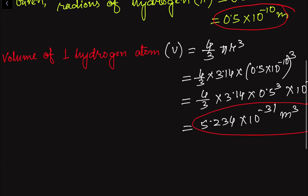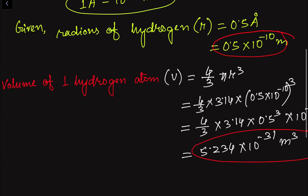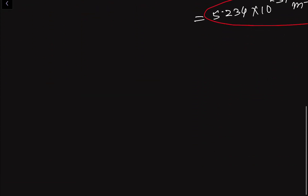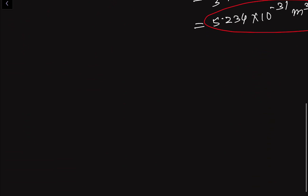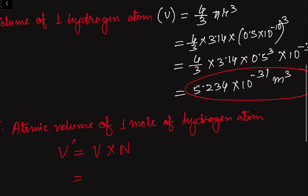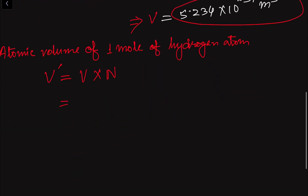This is the volume of a single hydrogen atom. Now, according to the question, we have to find the volume of one mole of hydrogen atoms. In one mole we have capital N hydrogen atoms, which is Avogadro's number. The volume of one mole, denoted V prime, equals the volume of one atom multiplied by N. So we multiply 5.234 into 10 to the power minus 31 by Avogadro's number, 6.023 into 10 to the power 23.